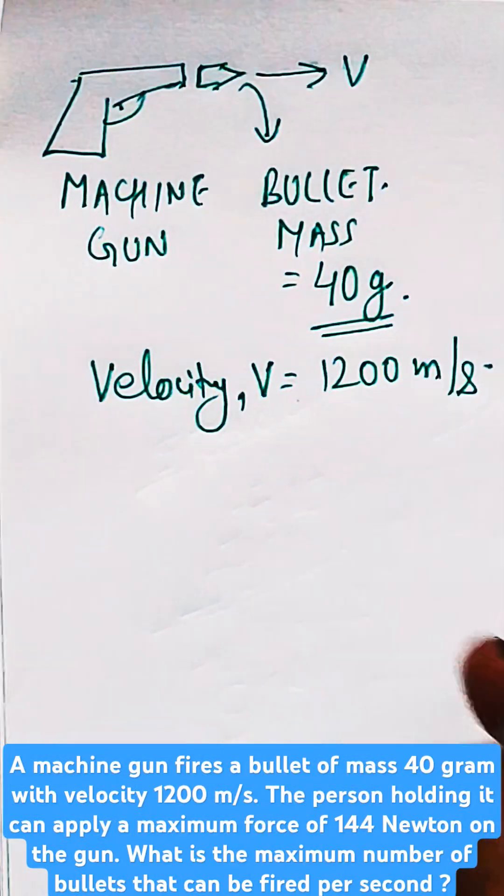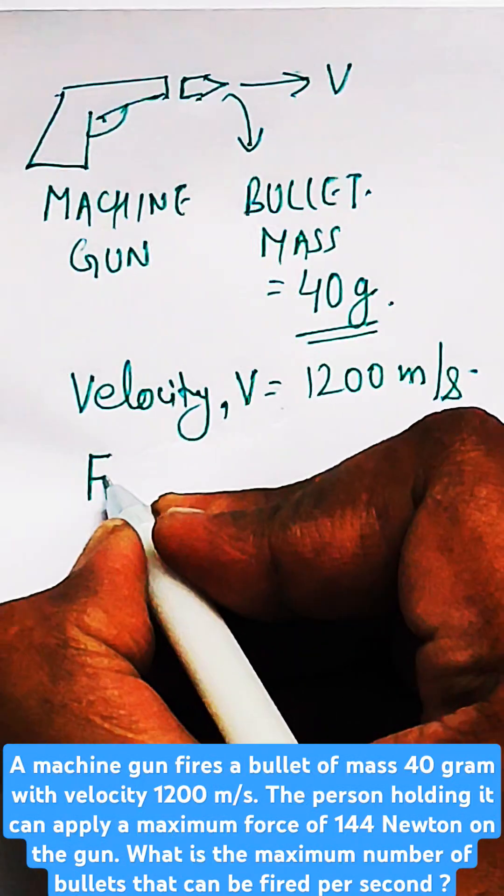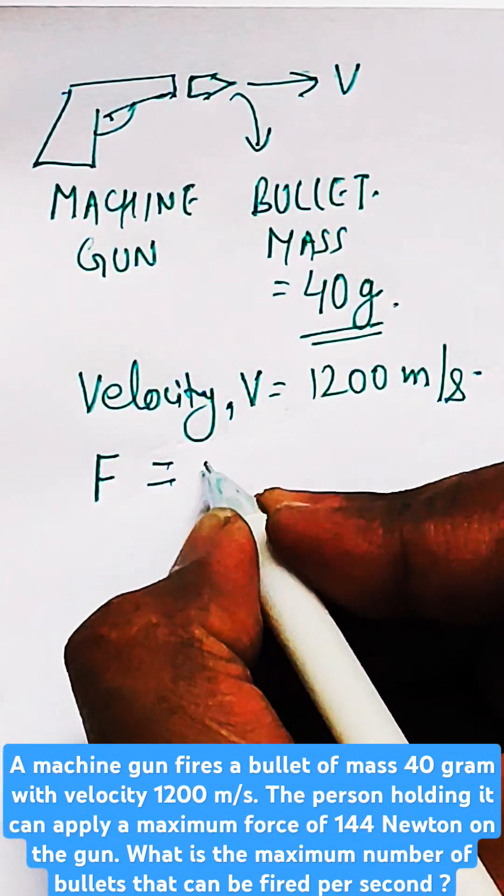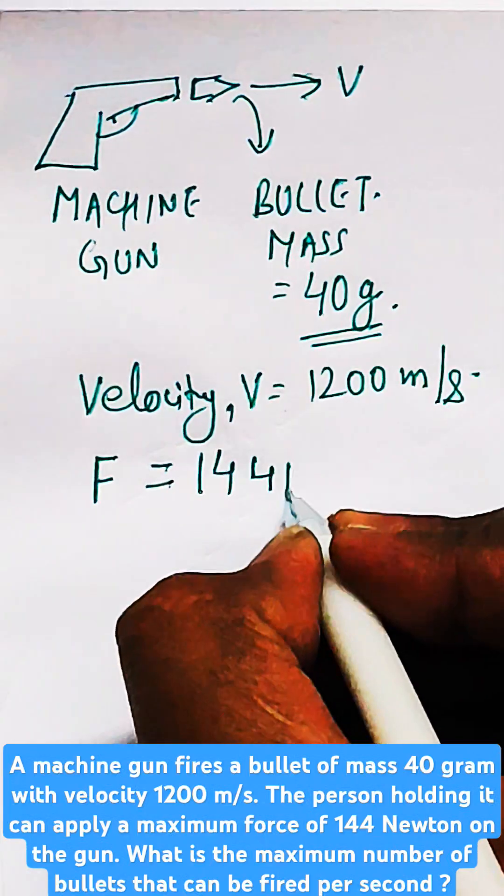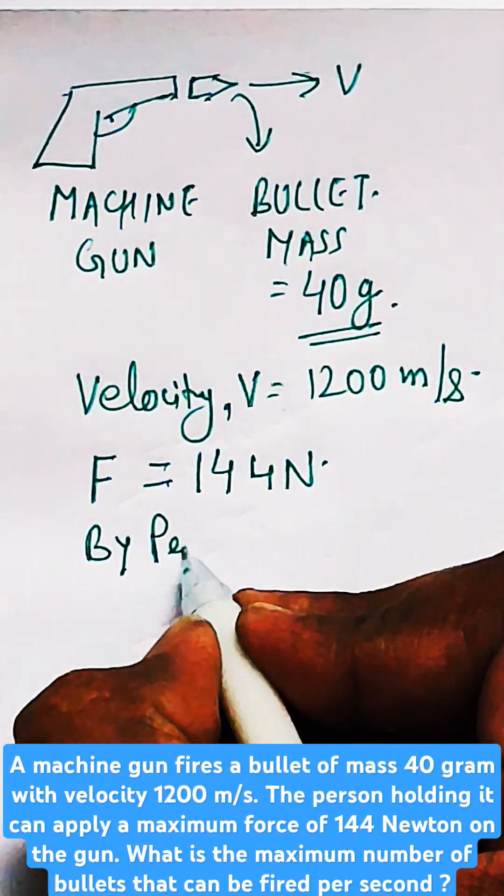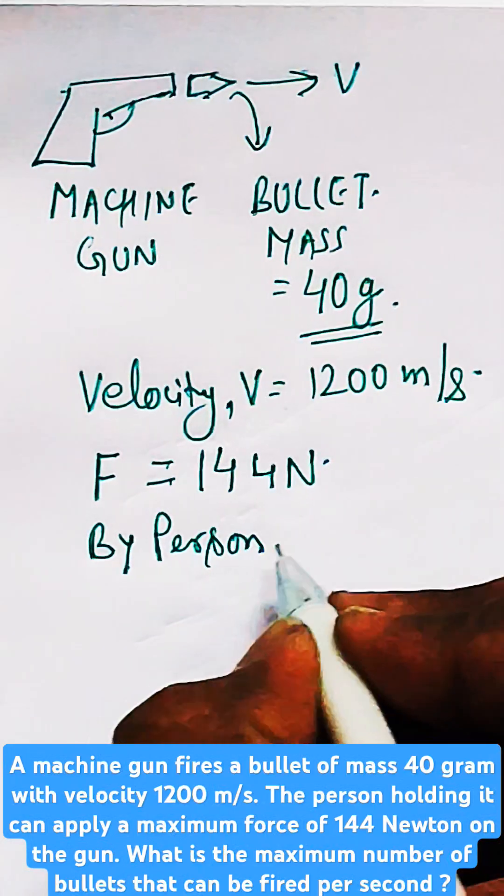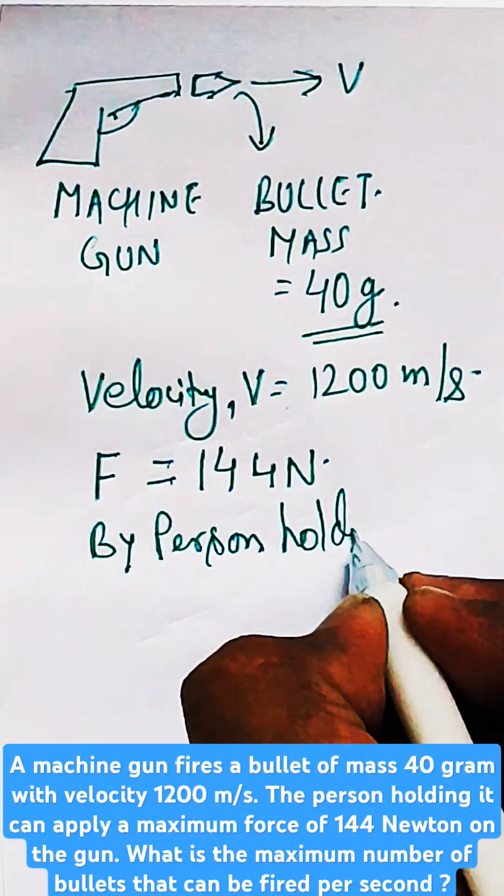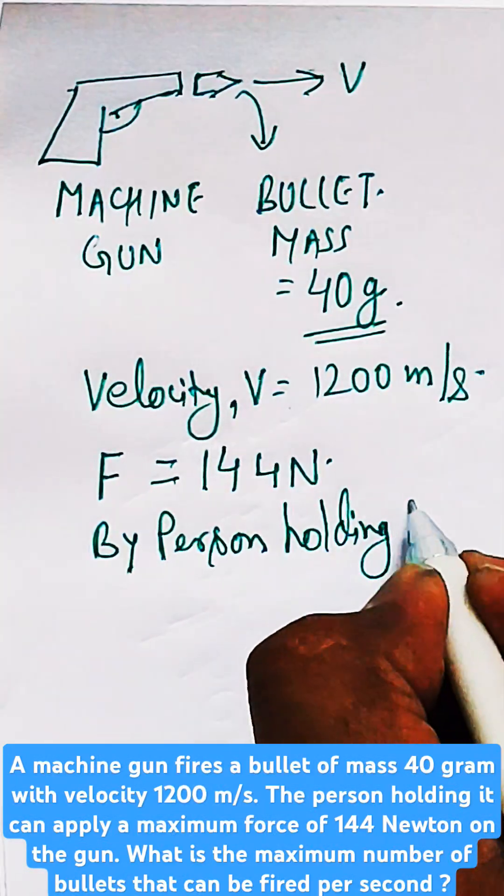M is given to you, V is given to you—that is mass and velocity. The force is also given to you as 144 Newtons. That means this force by which the person is holding the gun. This force is applied by the person holding the gun.